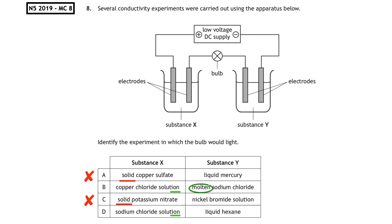This is where we have to look at substance Y. For B, we have molten sodium chloride, which means the ions are free to move. And if we look at substance Y for D, liquid hexane — hexane is made up of carbon and hydrogen, which means it's covalent molecular. Covalent molecular substances never conduct because the electrons are fixed in a bond. So the correct answer to this is multiple choice answer B.